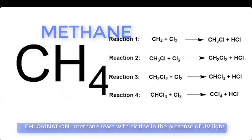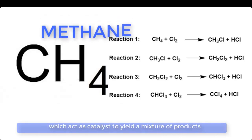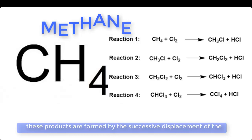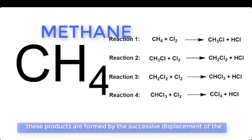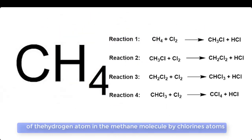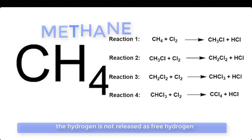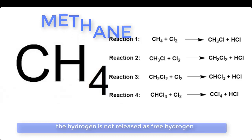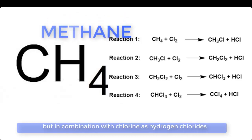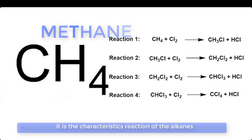Chlorination: Methane reacts with chlorine in the presence of ultraviolet light, which acts as a catalyst, to yield a mixture of products. These products are formed by the successive displacement of the hydrogen atoms in the methane molecule by chlorine atoms. The hydrogen is not released as free hydrogen but in combination with chlorine as hydrogen chloride. This reaction is called a substitution reaction, which is a characteristic reaction of the alkanes.